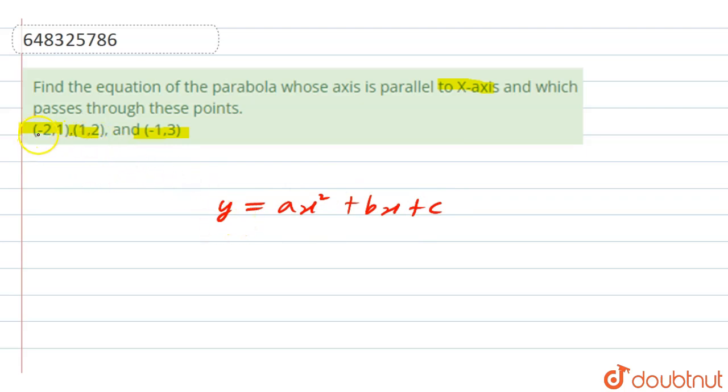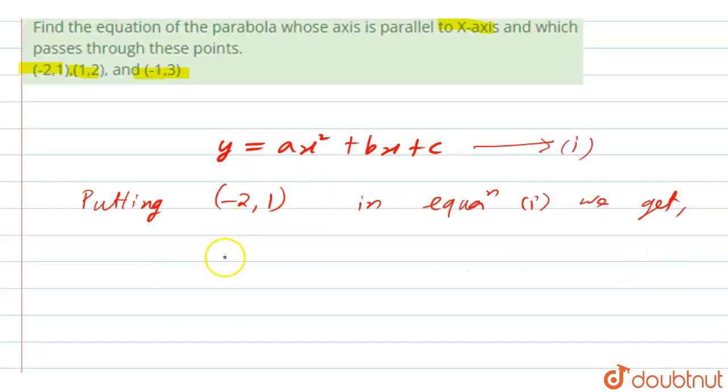So let us put minus 2 in place of x and 1 in place of y. That means we are substituting this value in this equation, let this be equation 1. So putting minus 2 comma 1 in equation 1 we get, as this is satisfying the parabola, 1 equal to a minus 2 square plus b into minus 2 plus c. So from here we will get 4a minus 2b plus c equal to 1. Let this be equation 2.